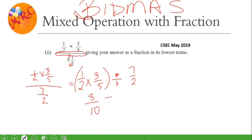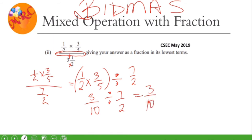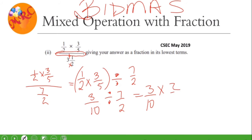Divide by — put back what we had. The division sign doesn't disappear, it goes back. So we have seven over two. Now we rewrite this: we have three over ten. For dividing fractions, we keep the first fraction — three over ten — and we change the division sign to multiplication. Keep, change. And then we flip the fraction that comes after. So seven over two becomes two over seven.